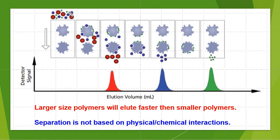Smaller polymers, represented by these green spheres, are able to pass through more pores and channels within the packing material and travel more slowly through the column. As a result, they will elute later from the instrument. So in general, larger size polymers will elute faster than smaller polymers.